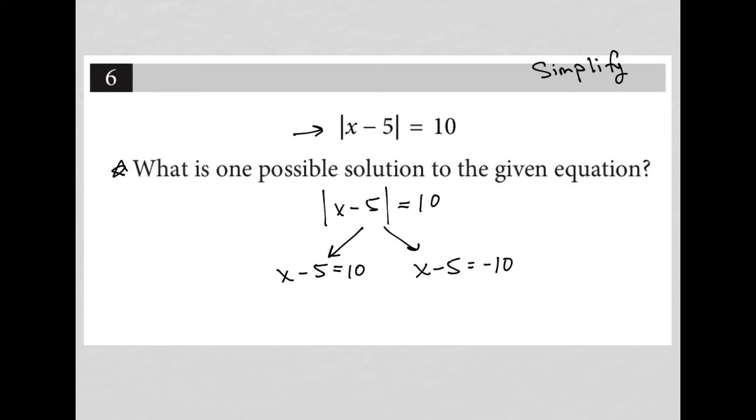All that means is inside of the absolute value can be positive 10 because the absolute value of 10 is 10. And the inside can also be negative 10 because the absolute value of negative 10 is also positive 10. That's why we get two separate answers.